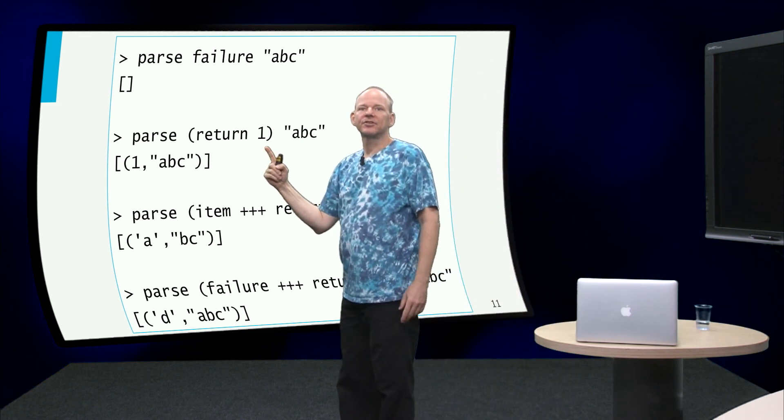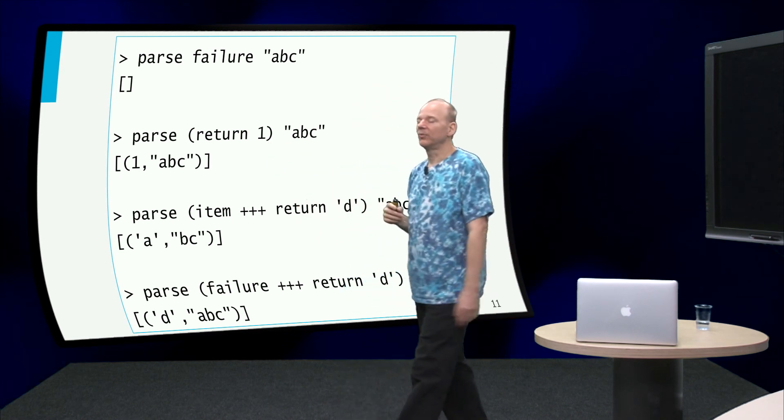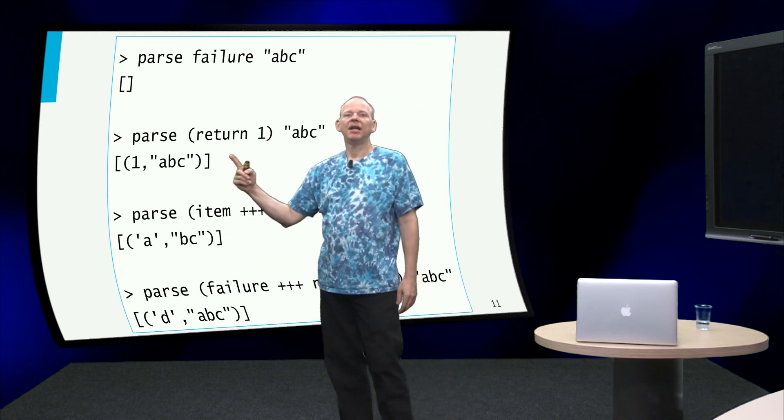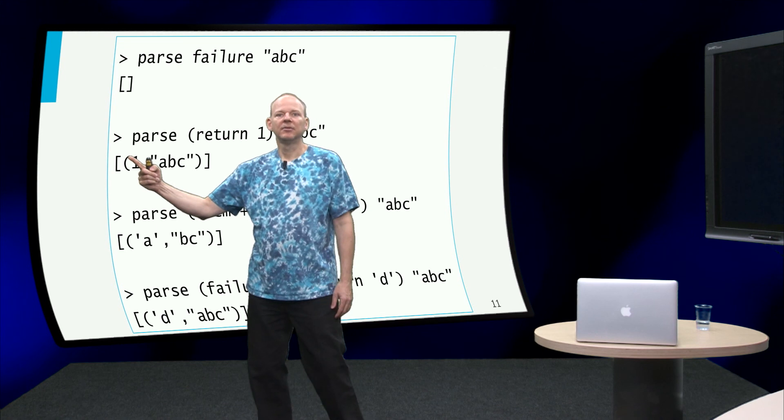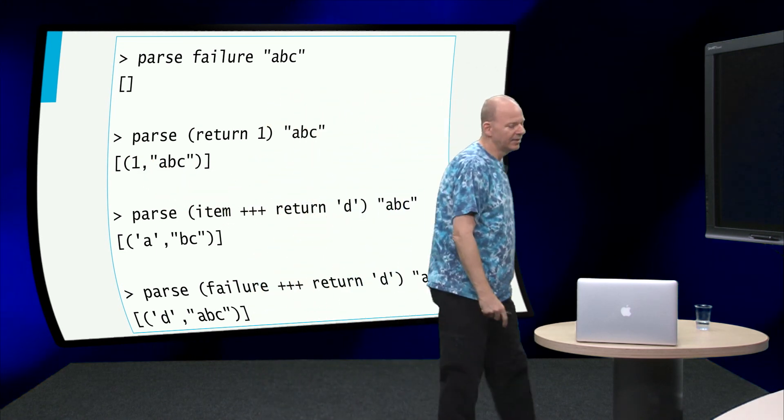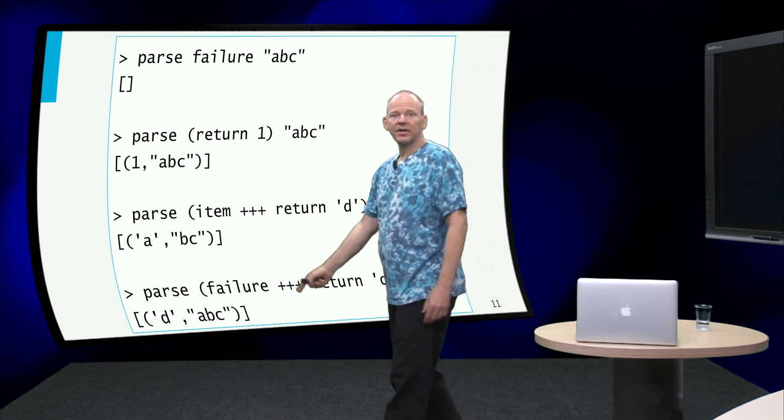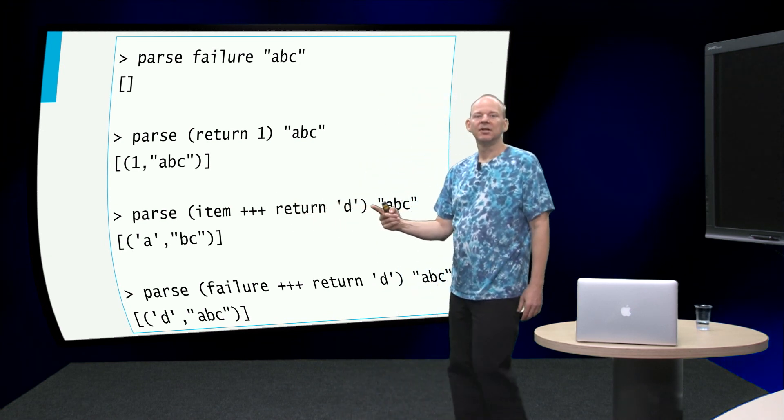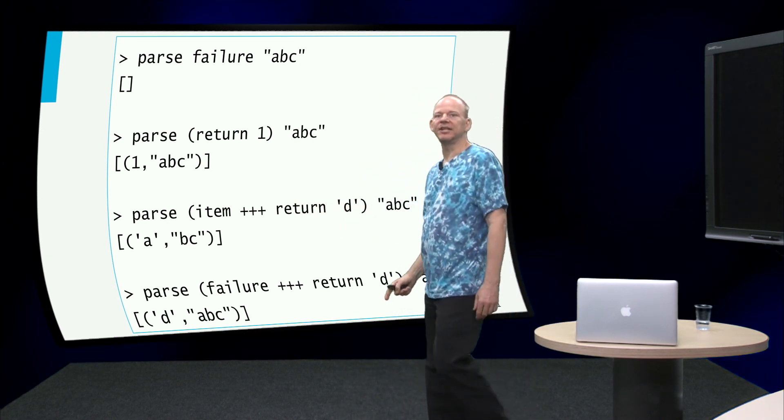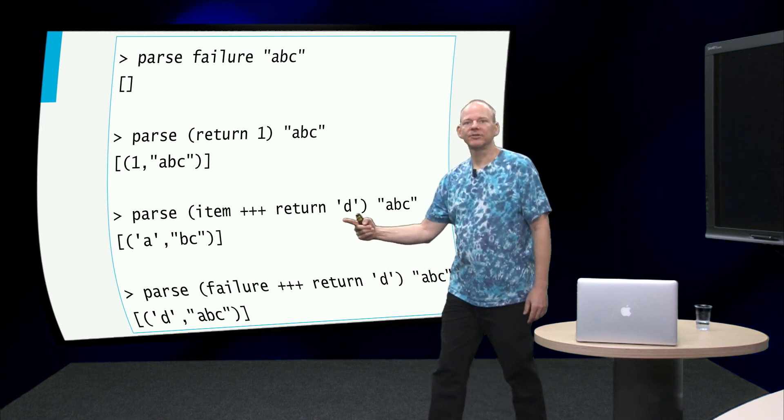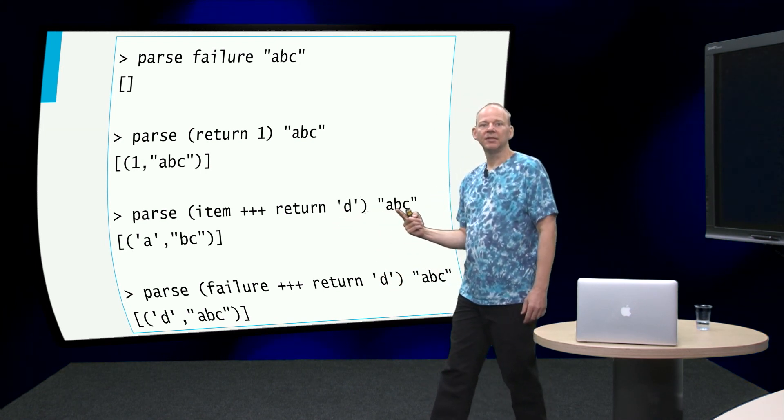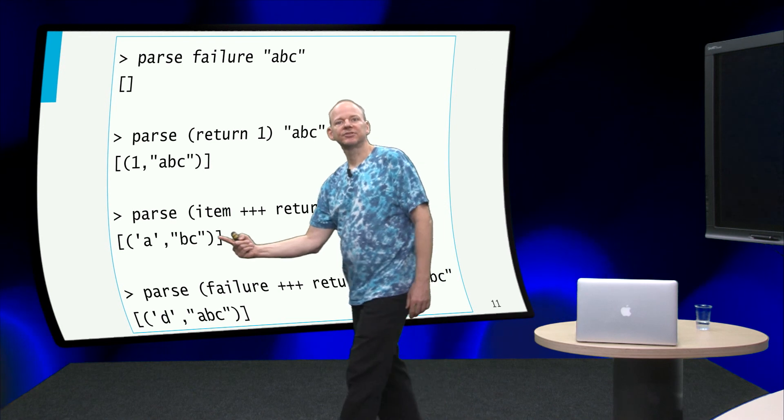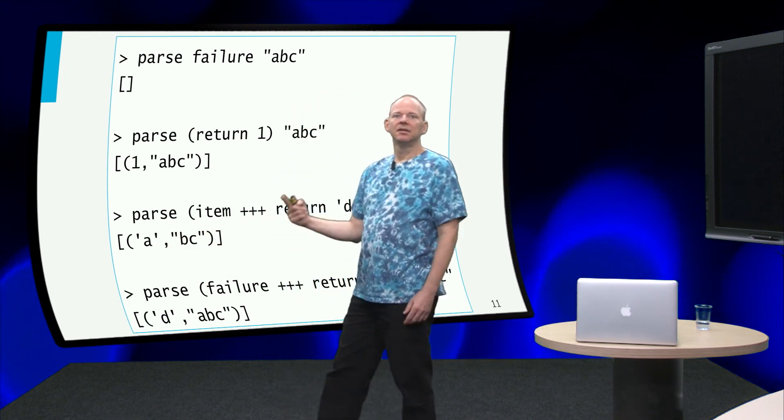Let's try the parser that always succeeds, and in this case the parser that always succeeds with the number 1, we apply that to the string abc and guess what, it succeeds by returning the value 1 and leaving the input unchanged. Now let's try to parse an item and if that fails, we immediately return d. So we use the parser that always succeeds. Let's do this on abc, well, since we can get the first element of abc, that will succeed, so we will just get the result abc.